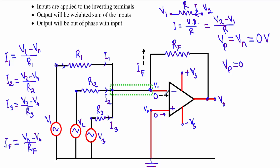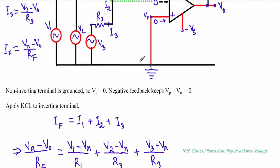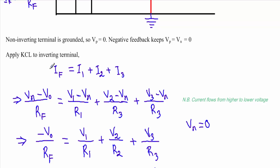Since the input resistance of the operational amplifier is very high, the current through the inverting terminal will be zero, and through the non-inverting terminal will also be zero. With Vn equal to zero from negative feedback, at this node we have three incoming currents I1, I2, and I3, and two outgoing currents of zero amperes plus IF. Applying Kirchhoff's current law: I1 plus I2 plus I3 equals zero plus IF.